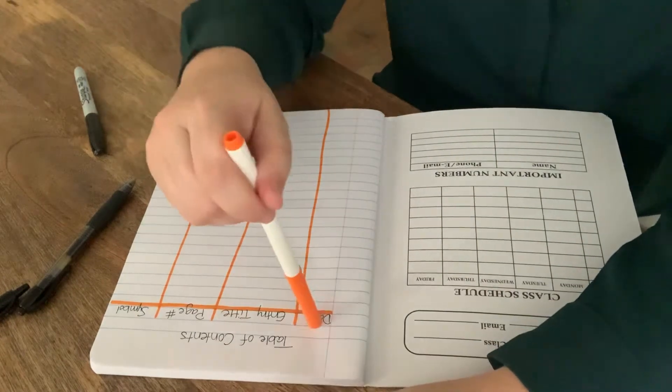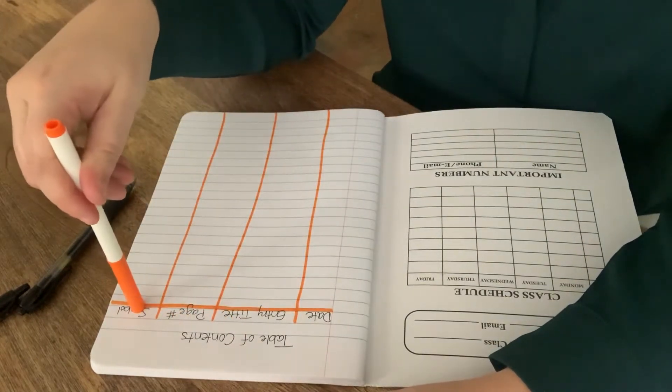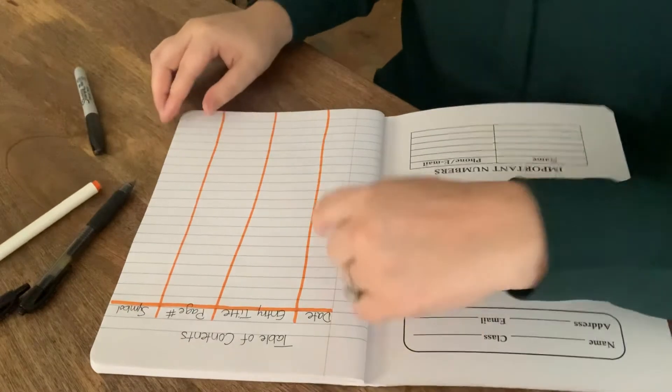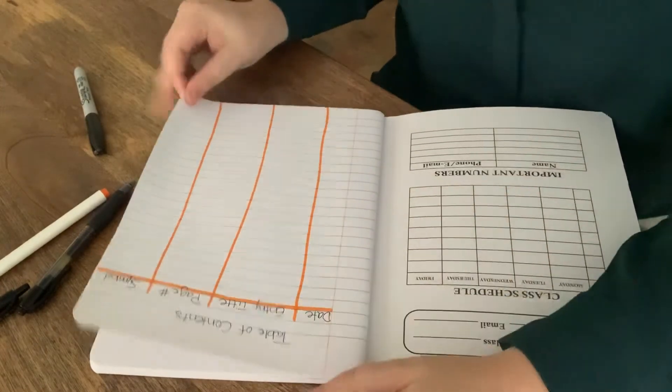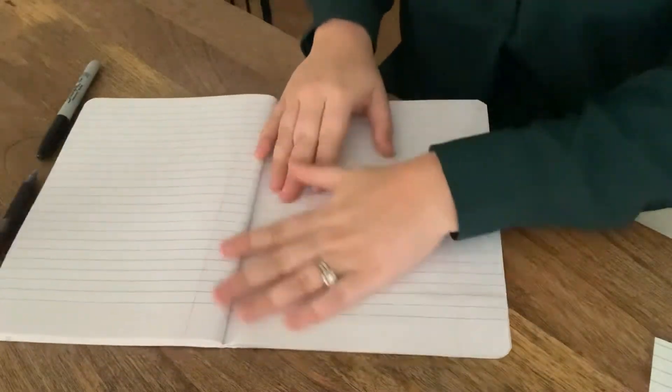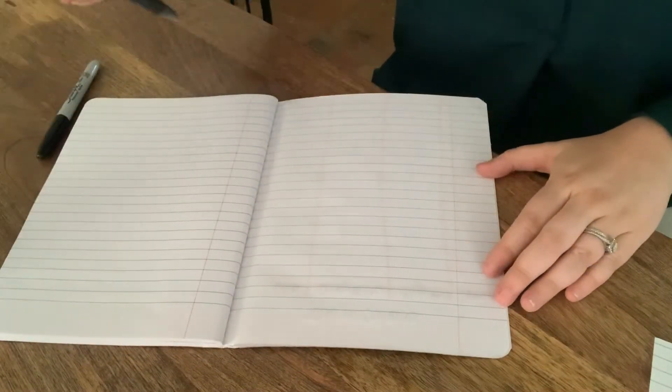So we have our date, entry title, page number, and symbols. We need to do this exact same page on the back as well. So go ahead and do it on the back as well.